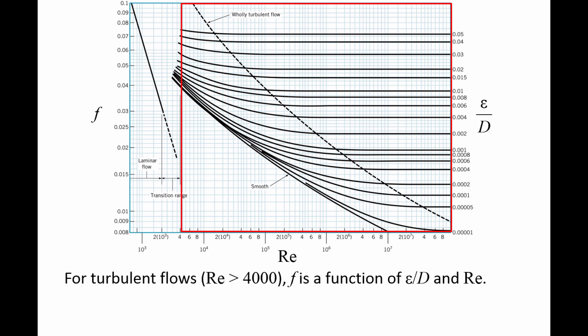Most of the Moody chart is dedicated to the turbulent flow regime, in which the Reynolds number is greater than 4,000. Recall from the Colebrook equation that the friction factor for turbulent flows is a function of both Reynolds number and relative roughness.